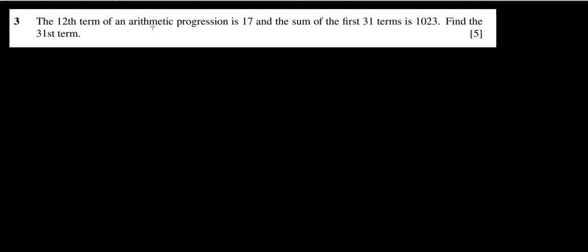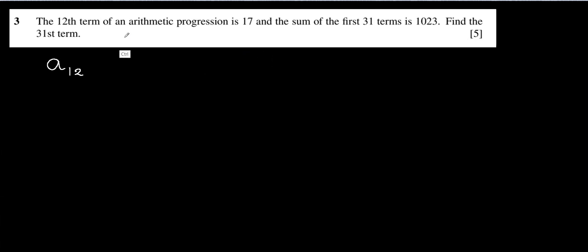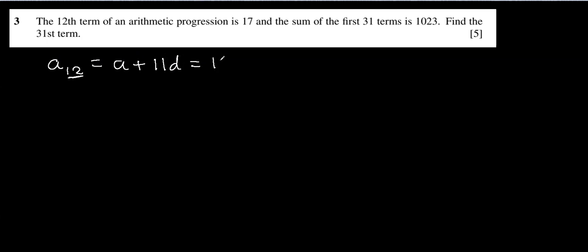In question 3, the 12th term of an arithmetic progression is 17. We interpret A₁₂ as a plus n minus 1 times d, where n is 12, so a plus 11d equals 17. This is equation number 1.